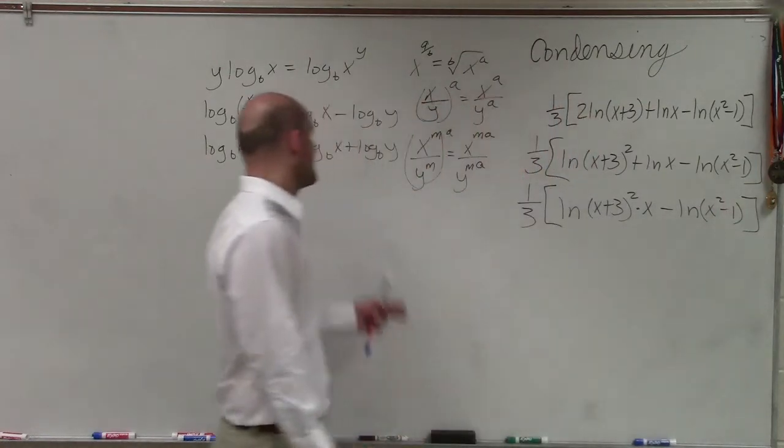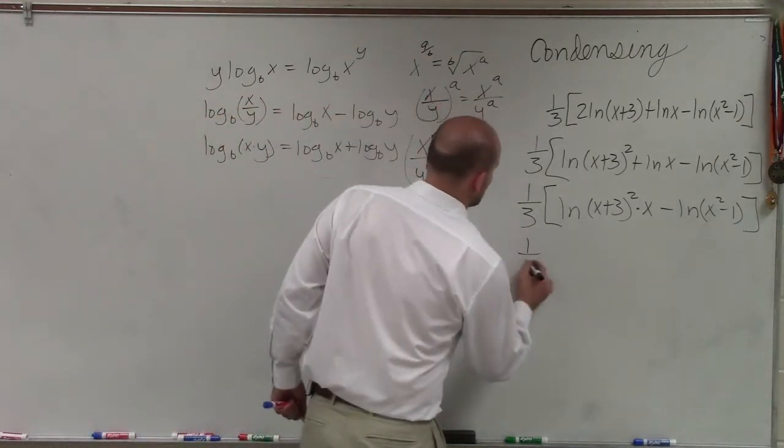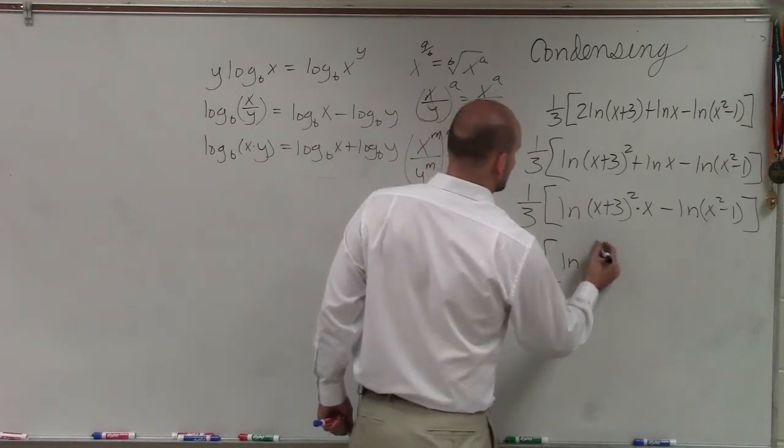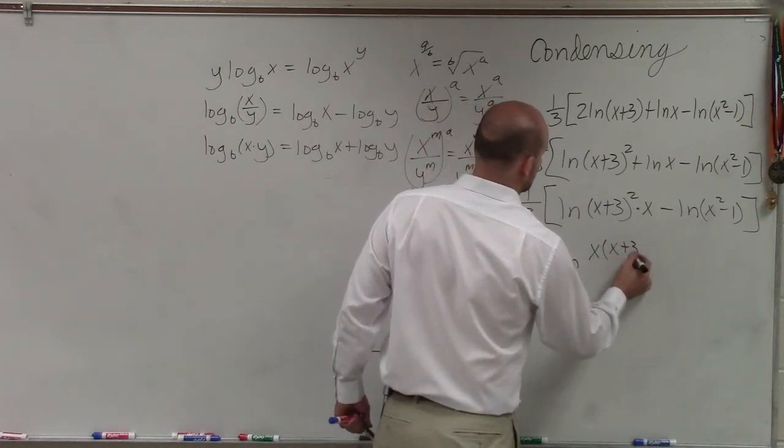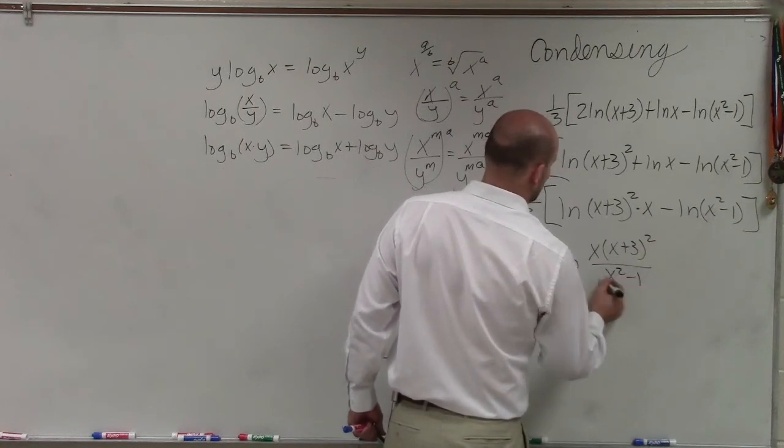Now the next thing is I have the difference of two logarithms. I can now rewrite that as the quotient of one single logarithm. So I have 1/3. I'm going to rewrite the x in front. So it'd be ln of [x(x+3)²] divided by (x²-1).